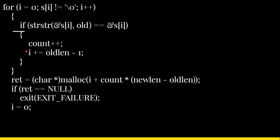We need to allocate sufficient memory to hold the result after replacing the old word with the new word. The variable i is incremented to account for the new string length. After the if block and for loop close, ret is assigned memory using malloc.